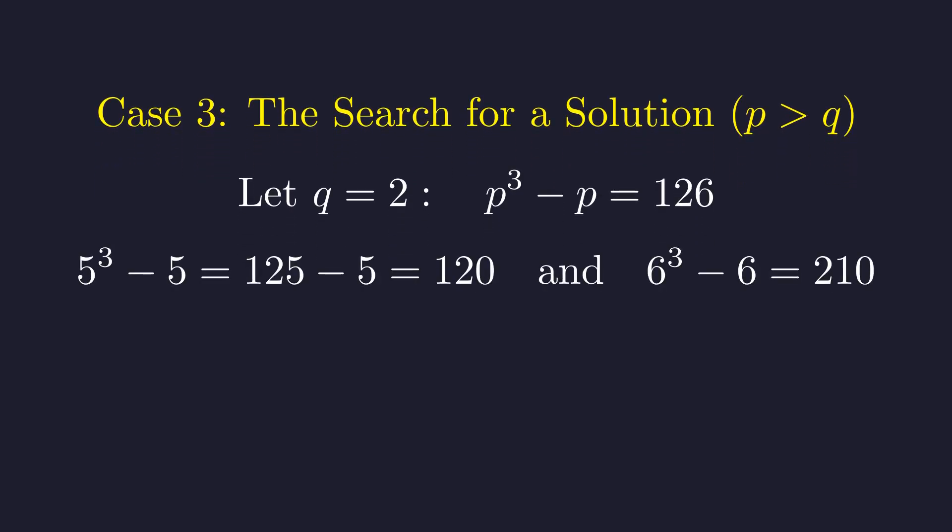Alternatively, testing integer values: 5 cubed minus 5 is 120, 6 cubed minus 6 is 210. Since the function is strictly increasing, there is no integer solution for p.